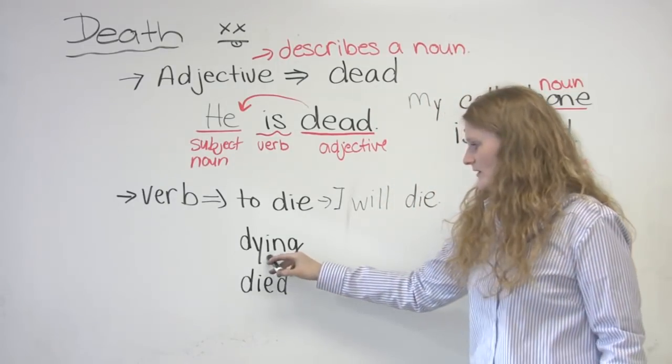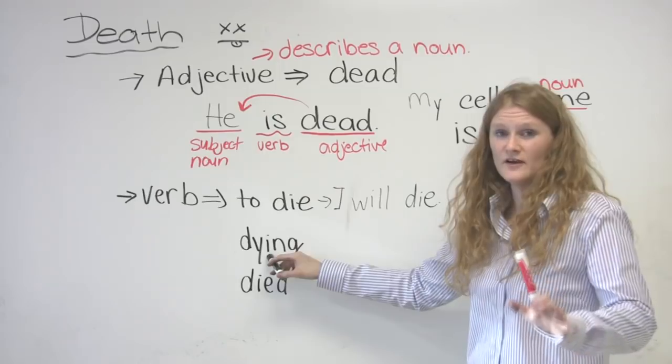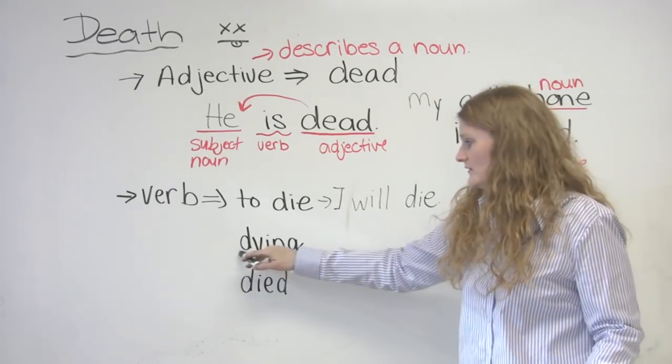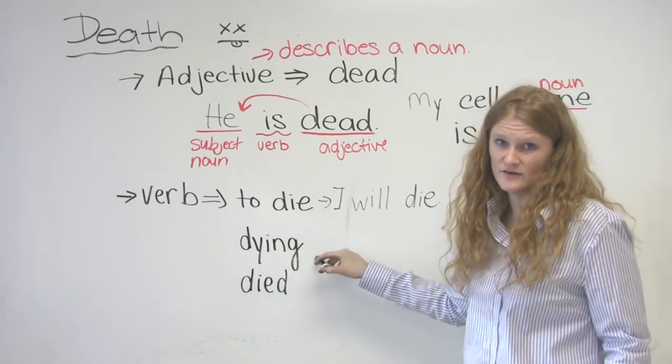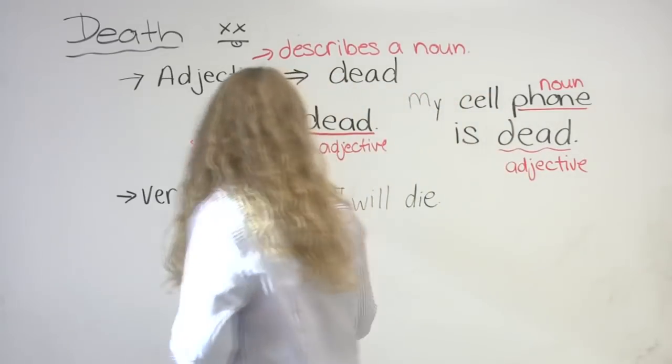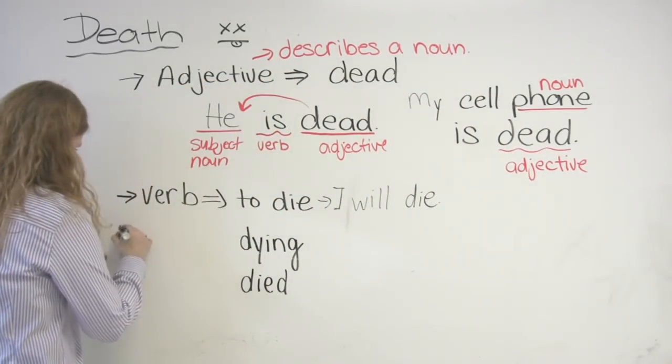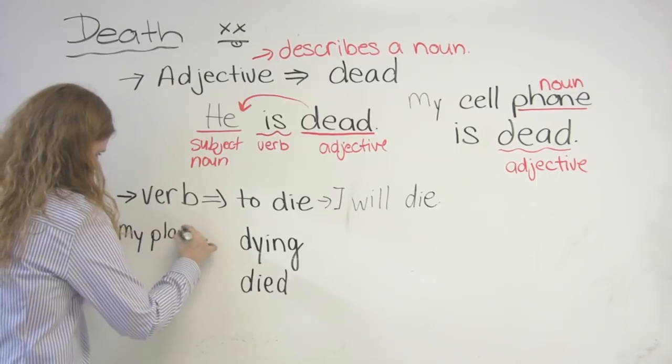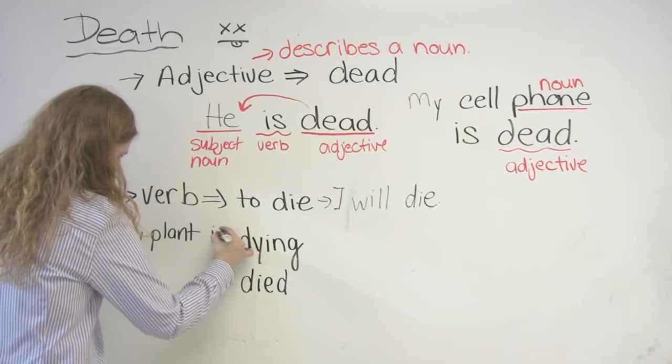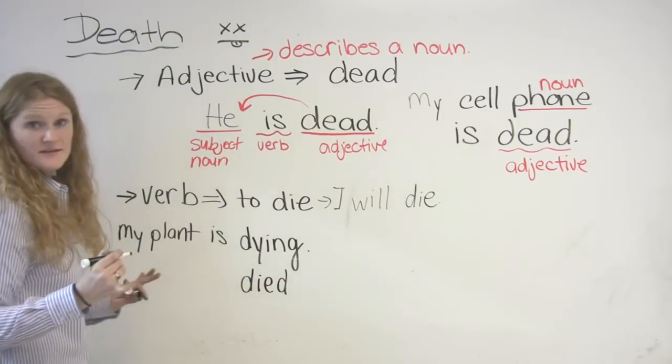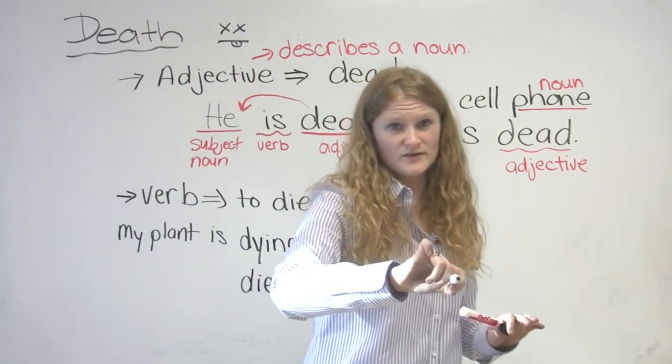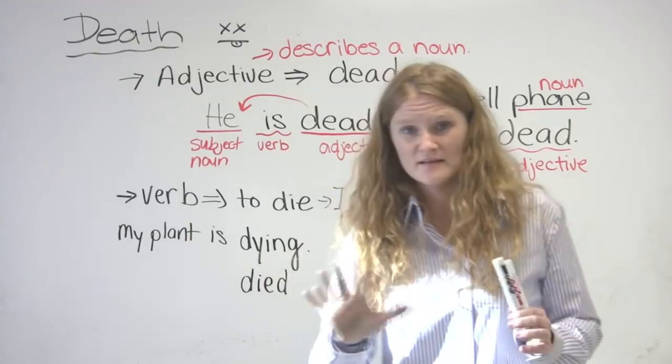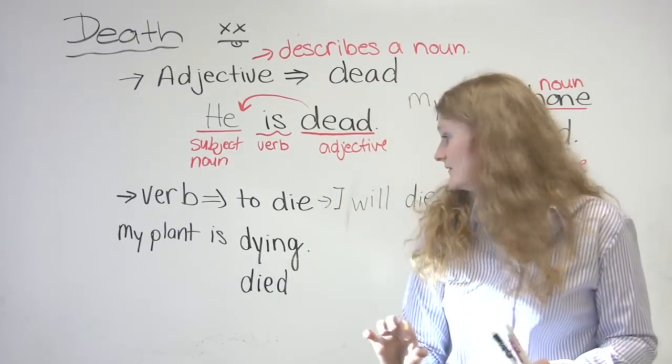The second part is a gerund. Now, a gerund is the verb plus -ing. So I can say, my plant is dying. I need to give it water. It's not dead. It is dying.